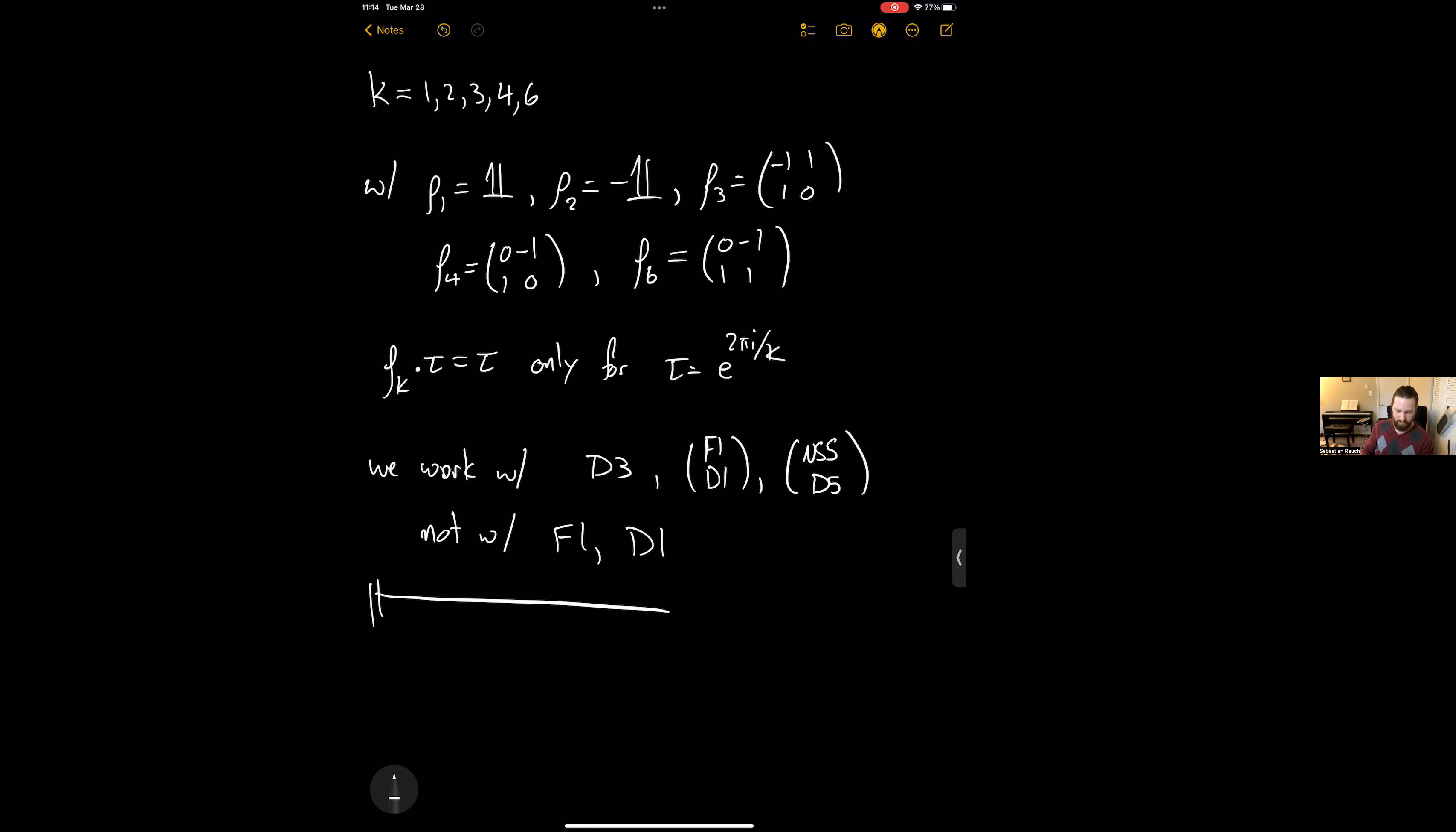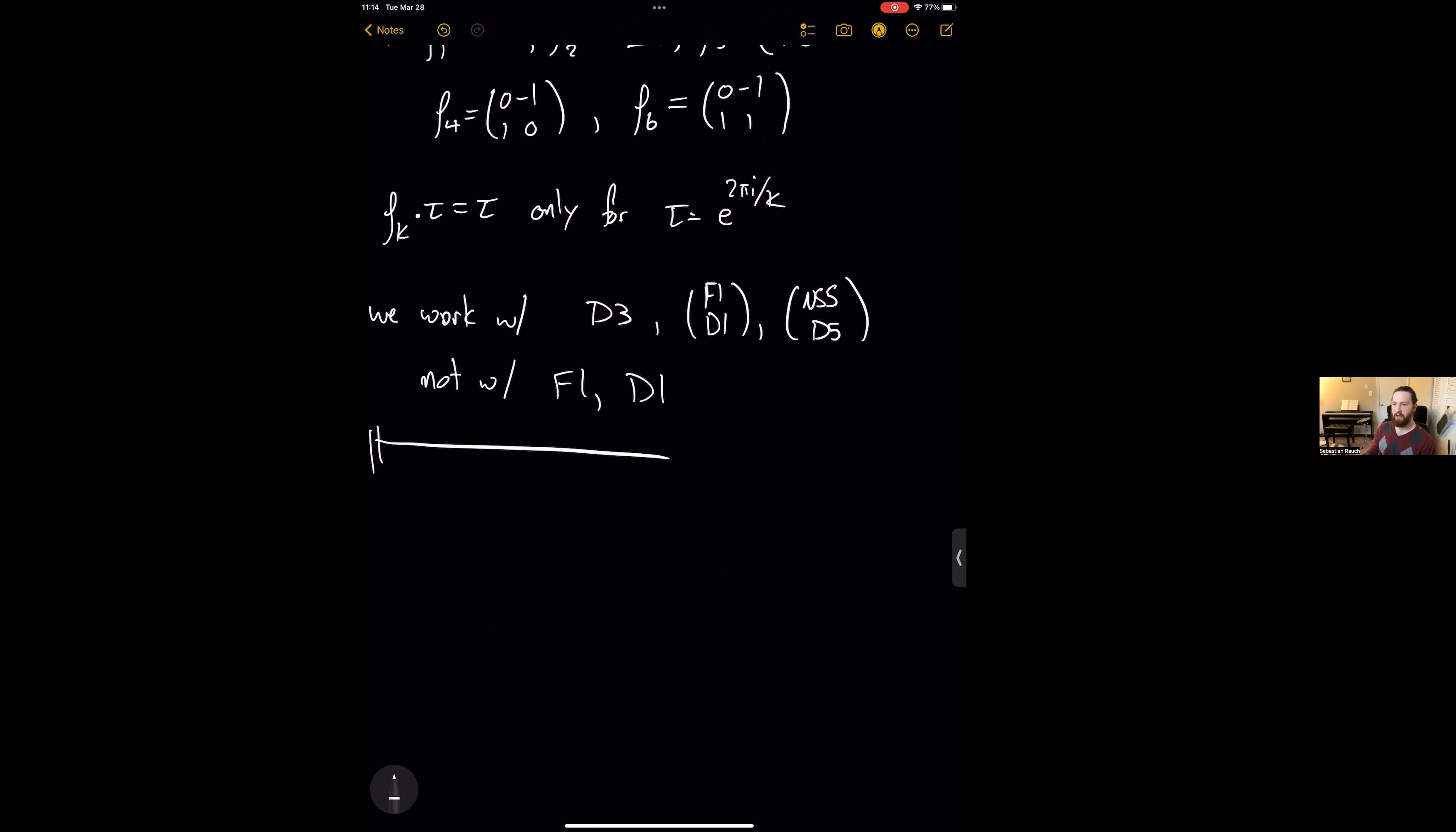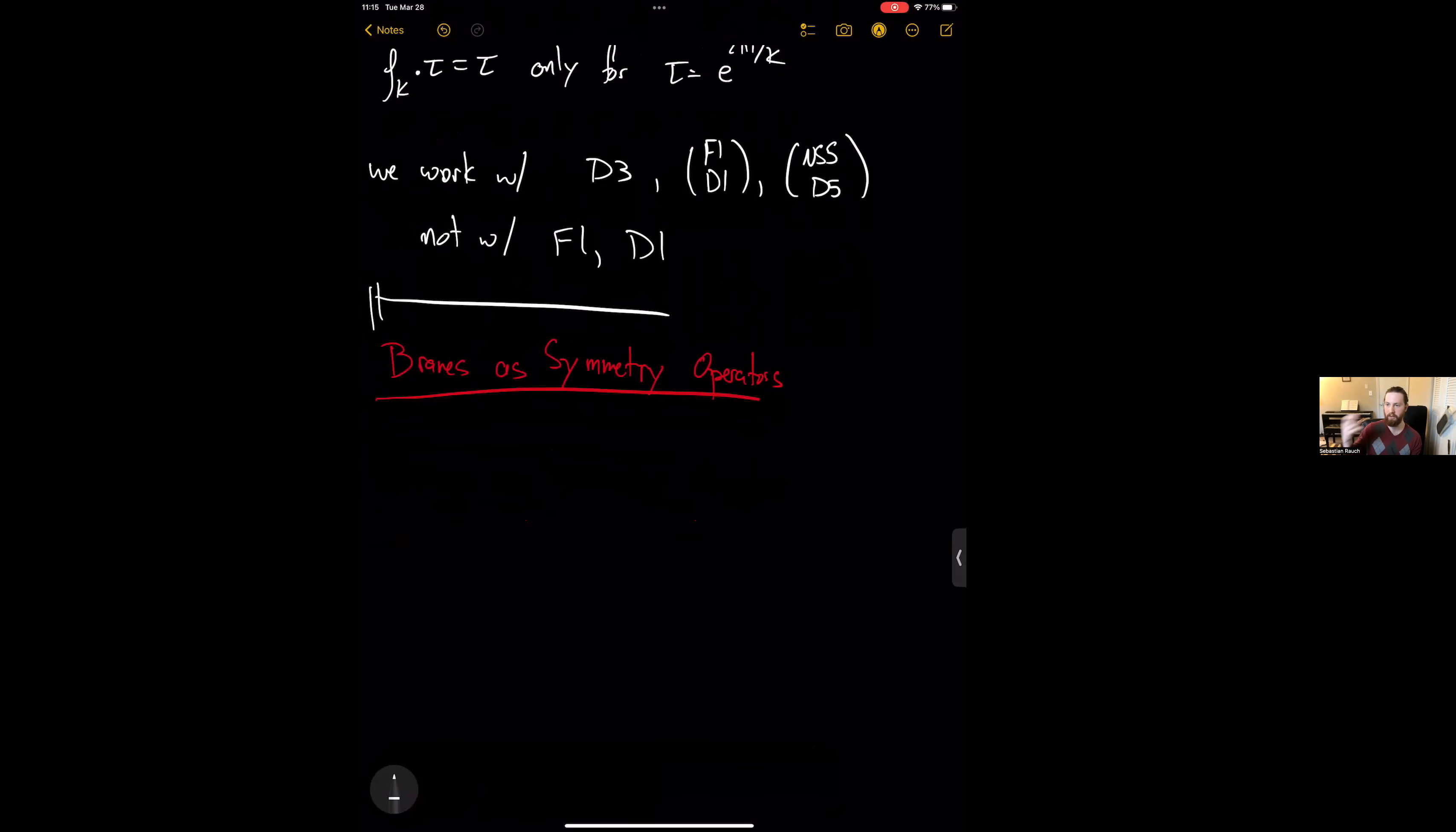Okay. So now the idea of our setting here is to study the dynamics of a stack of D3 branes coincident with the fixed point of the ZK action. And what we'll find is that this is dual to an N equals 3 SCFT. And so we will analyze the symmetries of this using the AdS-CFT correspondence, because we'll have this AdS5 times S5 mod ZK type geometry. So for the large rank limit, this makes sense. So next, I will introduce branes as operators, or as symmetry operators, I should say.